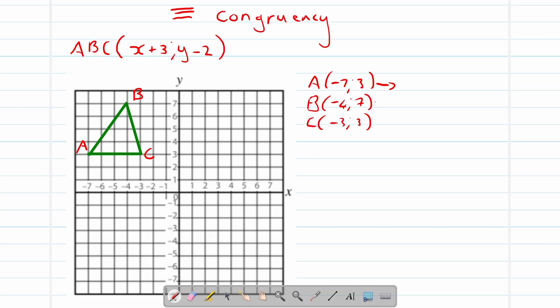So now we are translating it to a new coordinate, A accent, B accent, C accent. If the rule is x plus 3, then we say negative 7 plus 3 and it becomes negative 4. If the rule is y minus 2, we will say 3 minus 2, so that becomes 1.